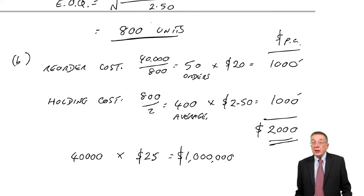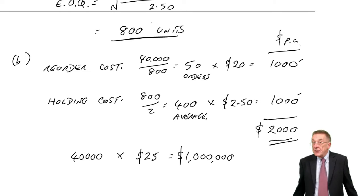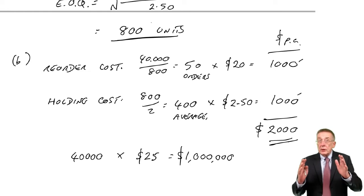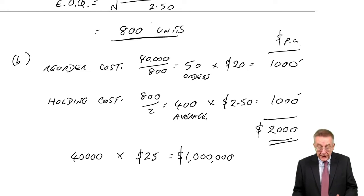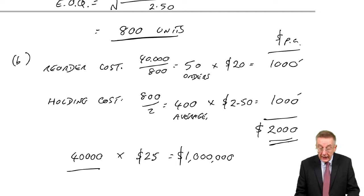The reorder cost, the holding cost, the total inventory cost of $2,000. That was the minimum. And if you remember, we'd ignored the actual cost over the year of buying the goods, because however many we ordered each time, we were still buying 40,000 over the year, and we were still paying $25 a unit.